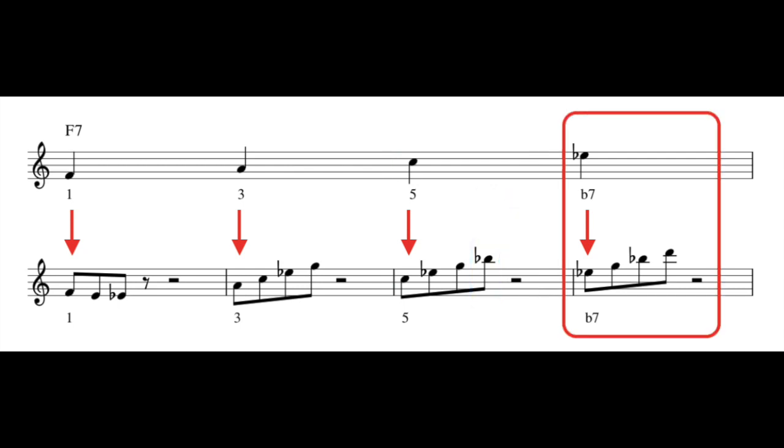And finally, if you start on the b7, you will go up this arpeggio, 7, 9, 11, 13. So now, make sure that you have these four small lines really down. Make sure that you can play those just as easily as you can play 1, 3, 5, 7.